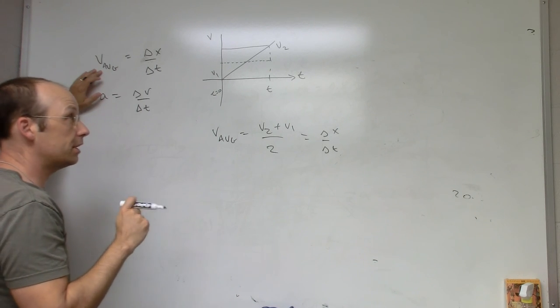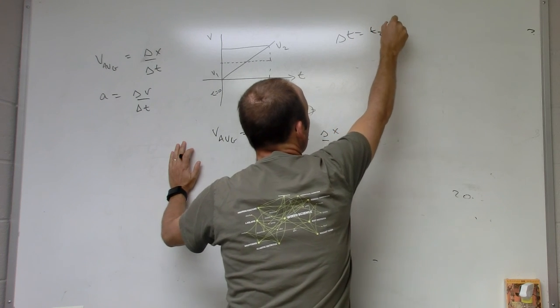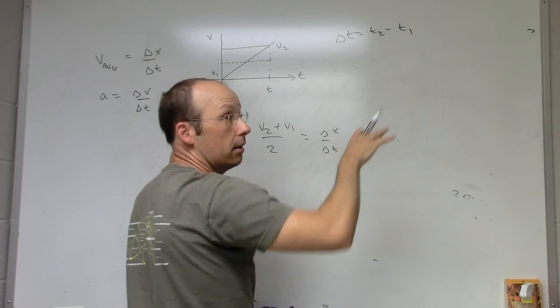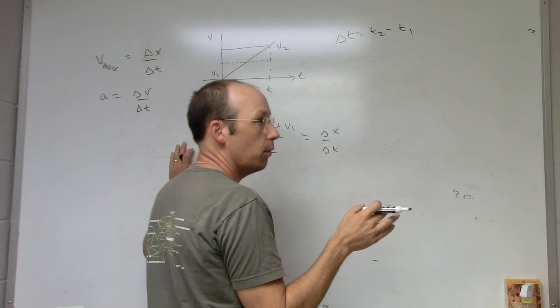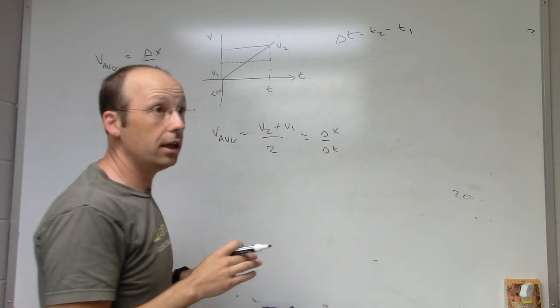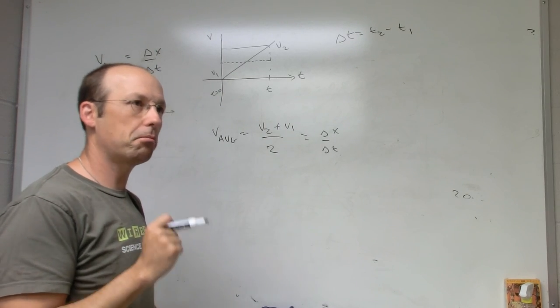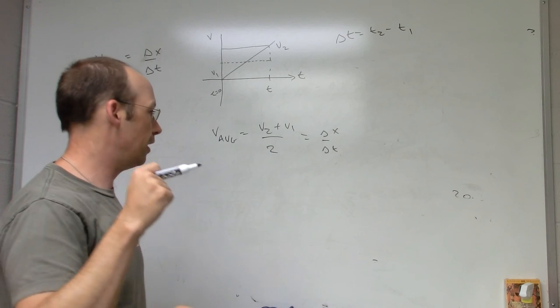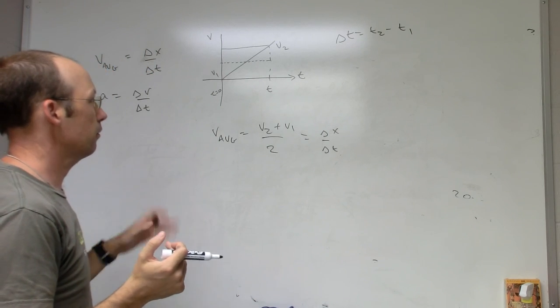Now, I'm going to say delta t is t2 minus t1, but I'm going to say this is just t. I'm going to call t1 zero. Really? No, I'm not. I'm going to leave it as delta t, because that's better. It's a better way to do it, and we should do things the best way. We shouldn't take shortcuts, so I'll leave it as delta t.